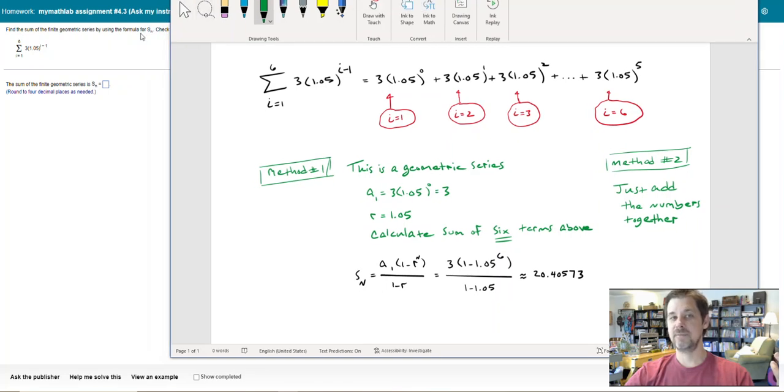Now when this particular question mentions using the formula for s sub n, there is a formula that will calculate the sum of a certain number of terms of a geometric series. Here it is right here: the sum of the first n terms of the geometric series is a1, the first term, times 1 minus r, this multiplier that gets you from one term to the next to the next and so on, to the power n, divided by 1 minus r.